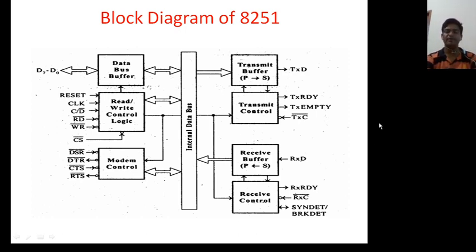Now one by one we will see all the signals of 8251. First one, this read write control is reset. It is used to reset 8251. And clock is associated. C/D bar, this is the most important signal. C/D bar, RD bar, WR bar and CS bar. CS bar is used to select or enable this IC.